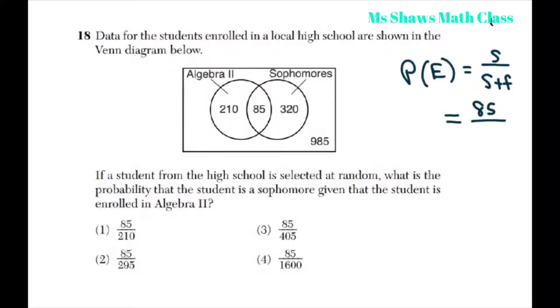And then the total students enrolled in Algebra, so the success is 85. So you do 85 plus the students not enrolled in Algebra 2 which is 210. So your total would be 85 divided by 295.